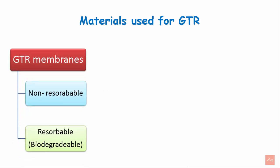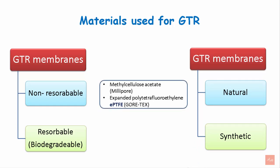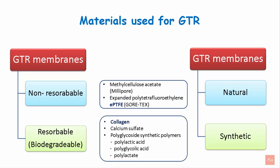The materials used for guided tissue regeneration are GTR membranes, which can either be non-resorbable or biodegradable/resorbable. The biodegradable membranes get degraded by the enzymes present in the body, and their source can either be natural or synthetic. Among the non-resorbable membranes are methyl cellulose acetate and expanded polytetrafluoroethylene. Among the resorbable ones are collagen, calcium sulfate, and other synthetic polymers like polylactic acid, polyglycolic acid, and polylactate.